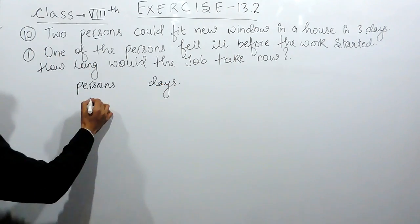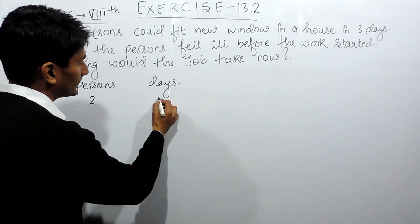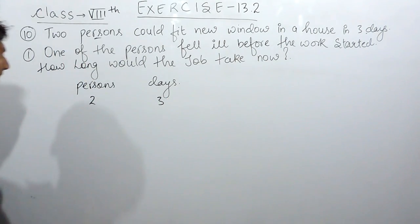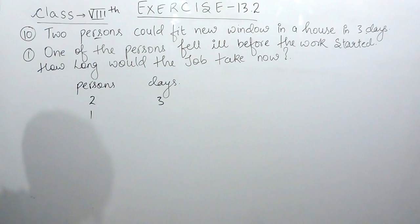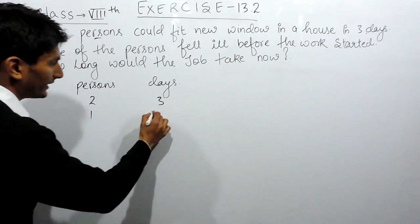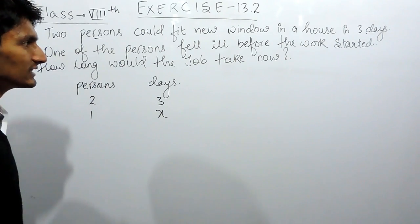It has been given that two persons can fit a new window in a house in three days. And now one person fell ill, means only one person is available for the work. You have to find how many days this man will take to complete this work.